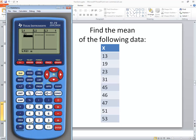So do 13 enter, 19 enter, 23 enter, 31 enter, 45 enter, 46 enter, 47 enter, 51 enter, and 53 enter.